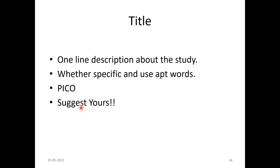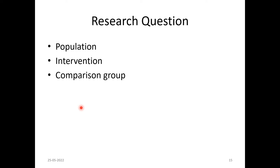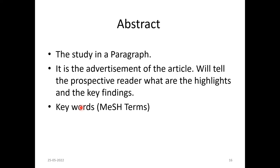Regarding the research question and PICO: P stands for Population — the population where the study was done. I stands for Intervention — the experiment or intervention under study. C stands for Comparison group. O stands for Outcome — usually a disease or disease prevention. PICO stands for Population, Intervention, Comparison, and Outcome. Some also use PICOT, where T stands for Time.